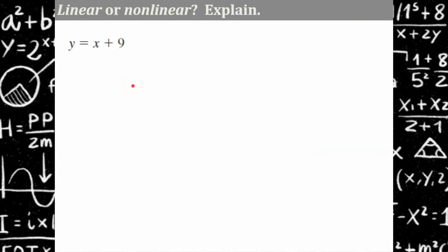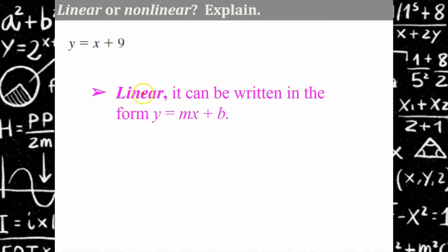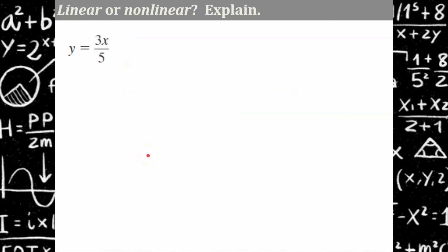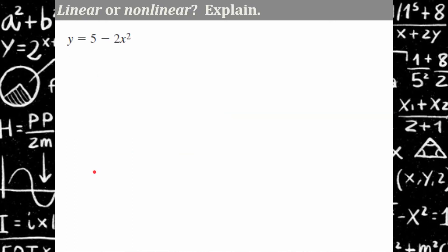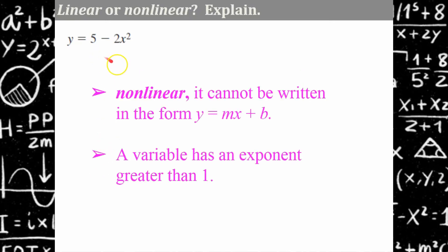Your turn — does this equation represent a linear or non-linear function? Pause and come back and hit play when you're ready. Welcome back. This is a linear function because it can be written in the form y equals mx plus b. Remembering that this can be rewritten as three-fifths times x, with a y-intercept of zero — we just don't need to write the add zero. So this is a linear function passing through the origin. The next one is non-linear because it cannot be written in the form y equals mx plus b; there is a variable with an exponent other than one.